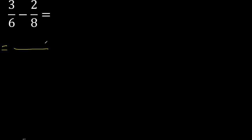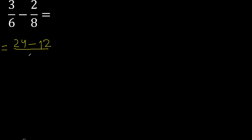First, multiply like this: 8 x 3 = 24, minus 6 x 2 = 12. Here, 6 x 8 = 48. 12.